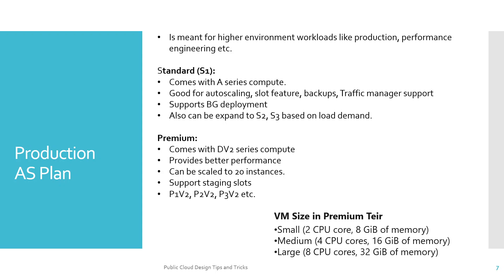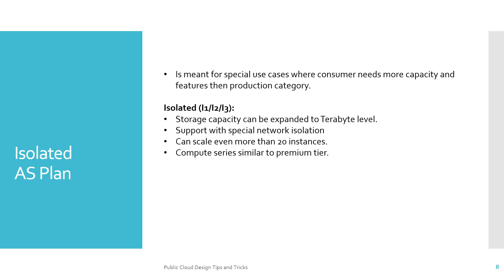Within this, if you categorize by VM size, there are three possibilities: Small comes with 2 CPU cores and 8 GB memory; Medium comes with 4 CPU cores and 16 GB memory; and Large comes with 8 CPUs and 32 GB of memory.